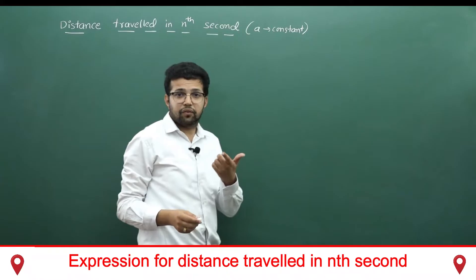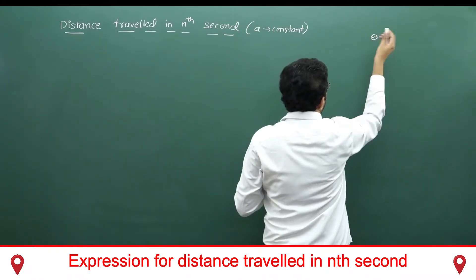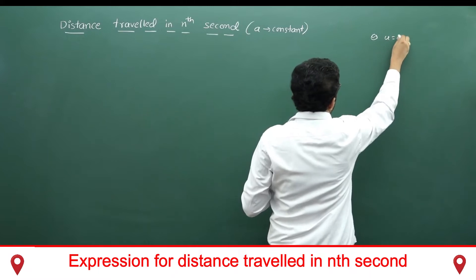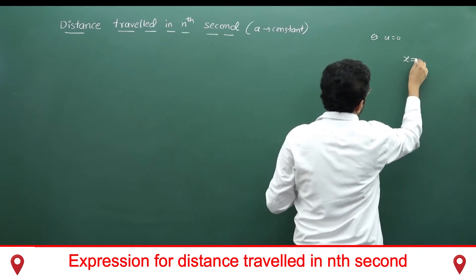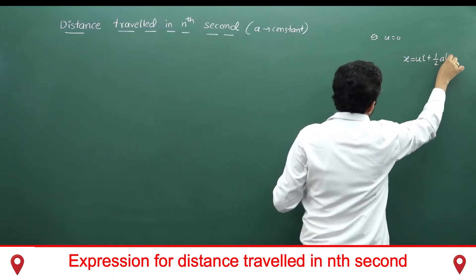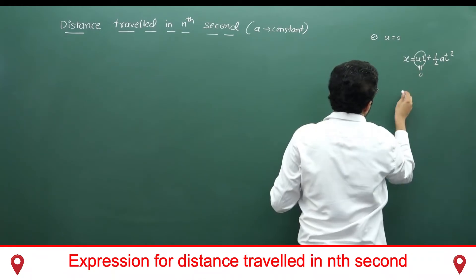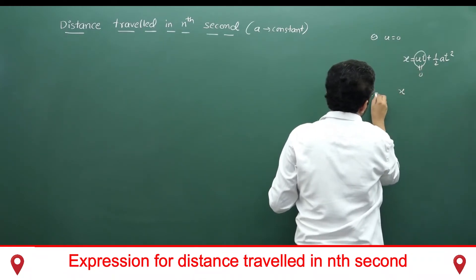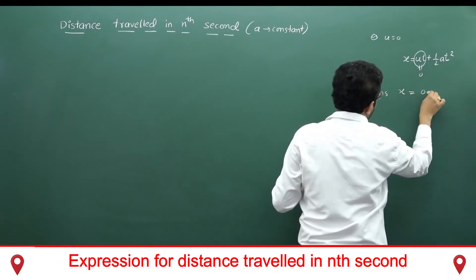In the case of free fall, if you drop an object, initial velocity u is 0. The formula for distance travelled is x = ut + ½at². When t = 0 seconds, x = 0 meters.